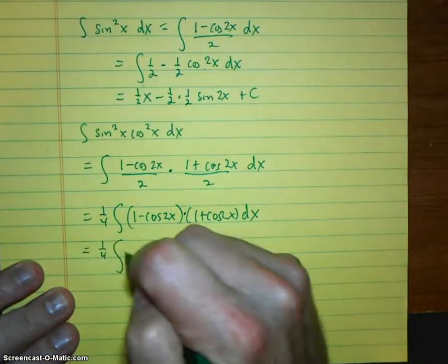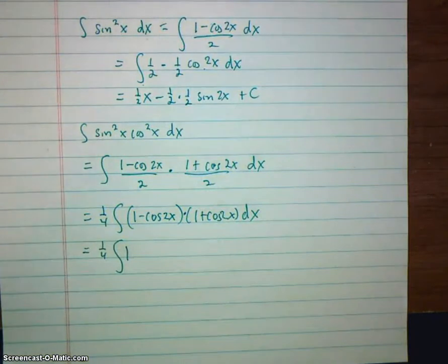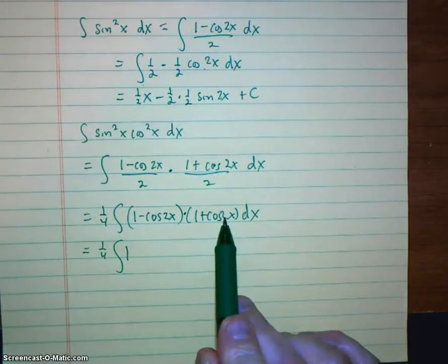This is one of the rare times where FOIL is actually a good idea. So we're going to do that. 1 quarter integral 1. Now notice what's going to happen here. On the outside, we're going to have a cosine 2x.